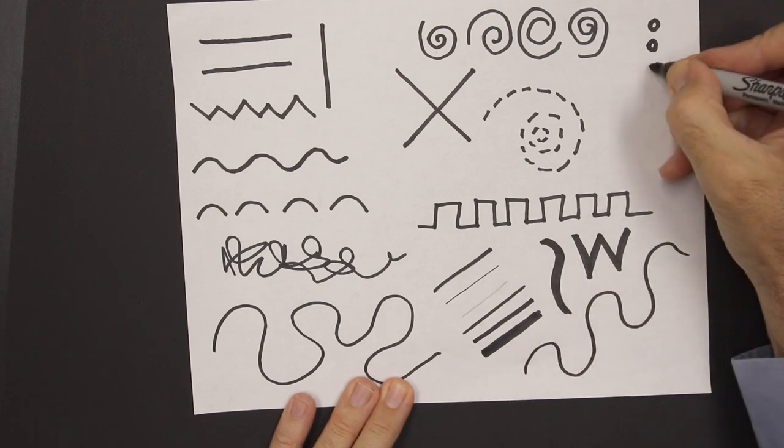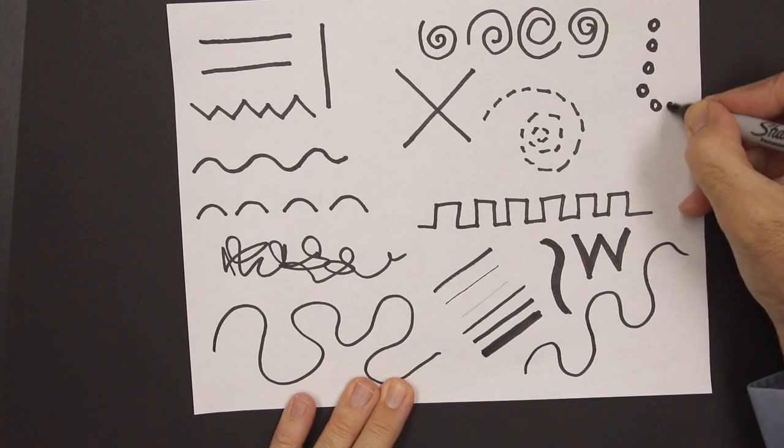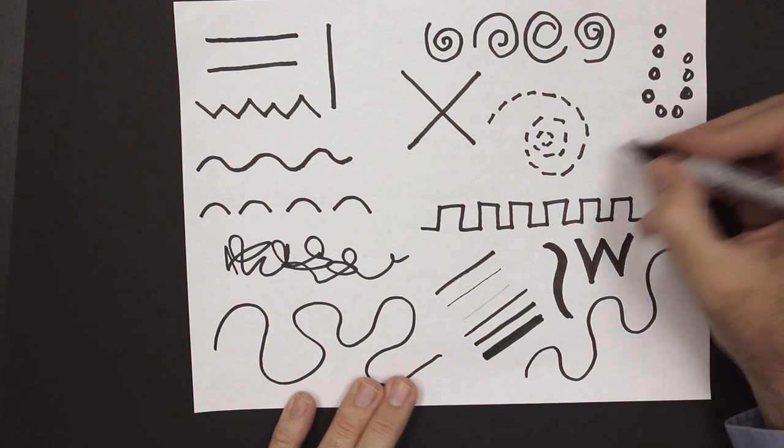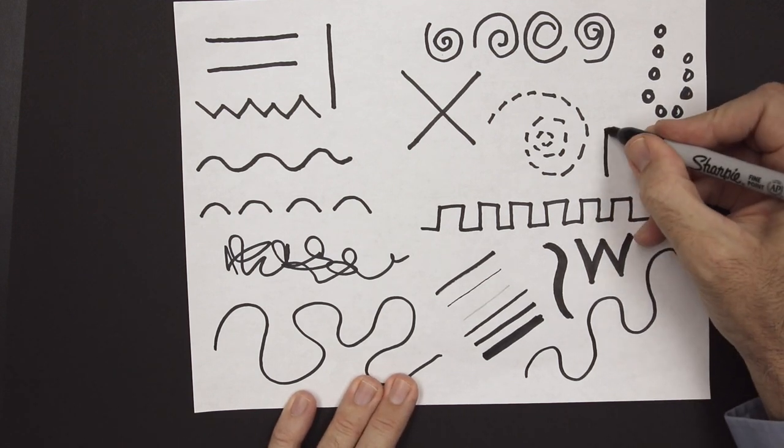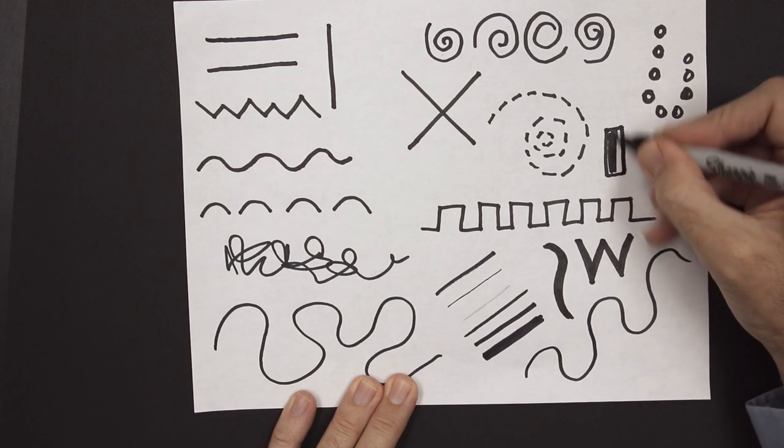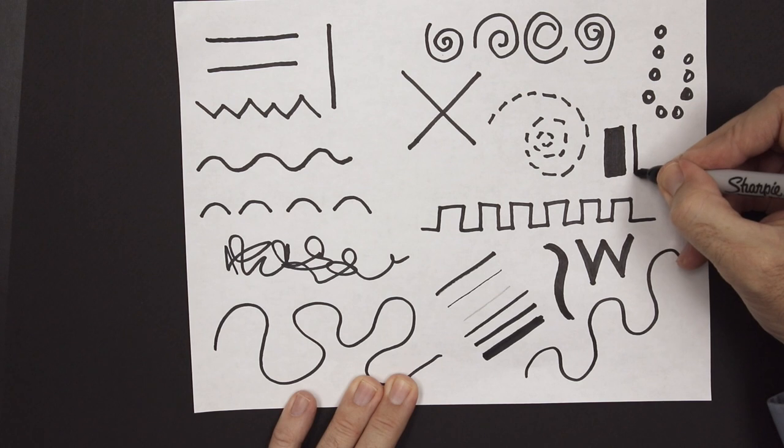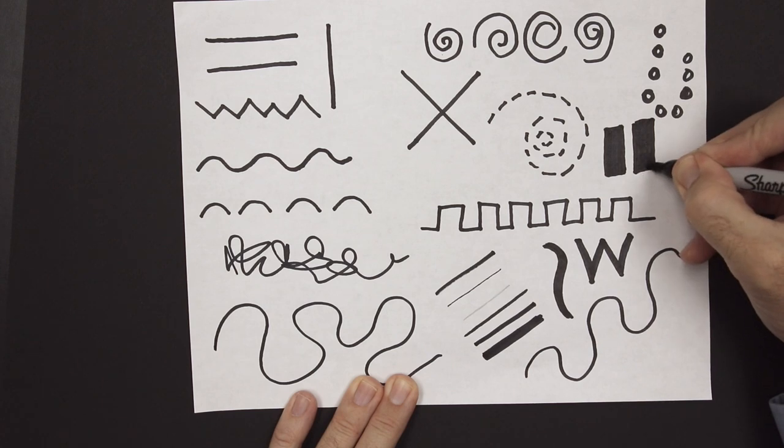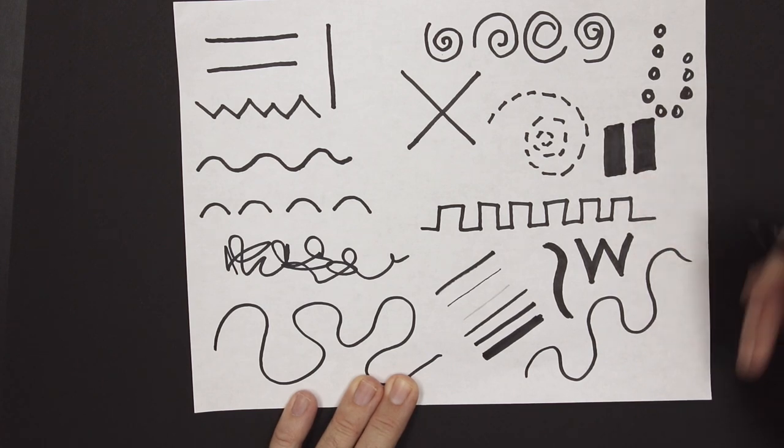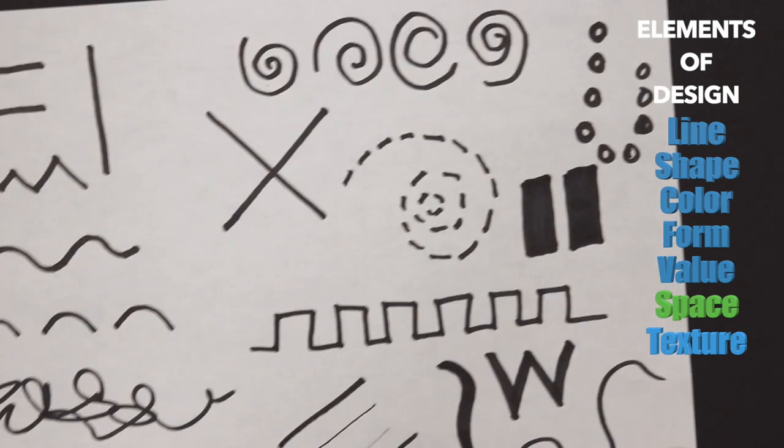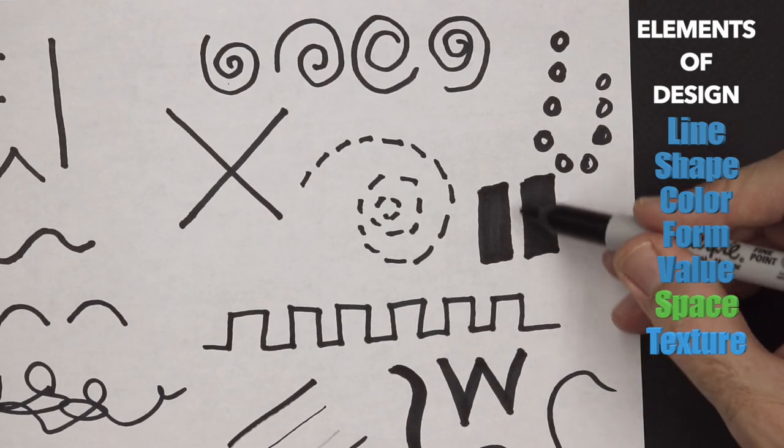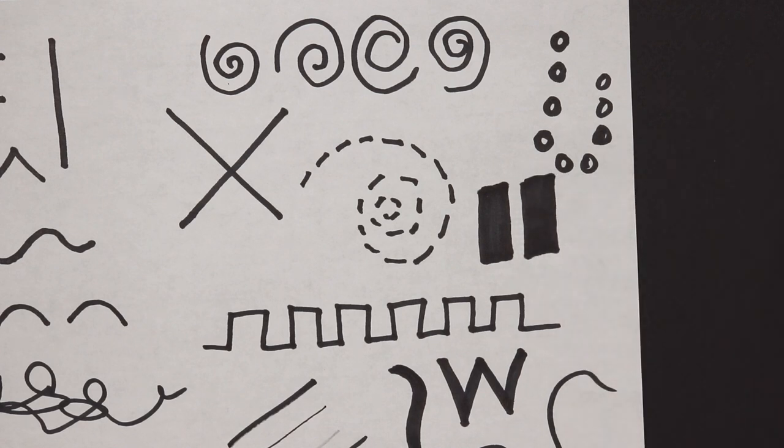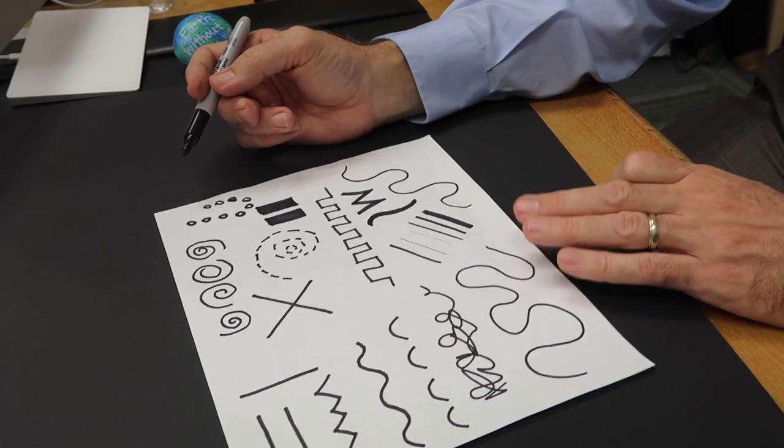Sometimes we make lines out of objects like circles. Look at this. I'm going to make a rectangle and I'm going to make another rectangle. Can you see the space in between the two rectangles? I didn't even touch that but that forms a line. That's negative space. So that's a line without even creating a line. Pretty interesting, huh?